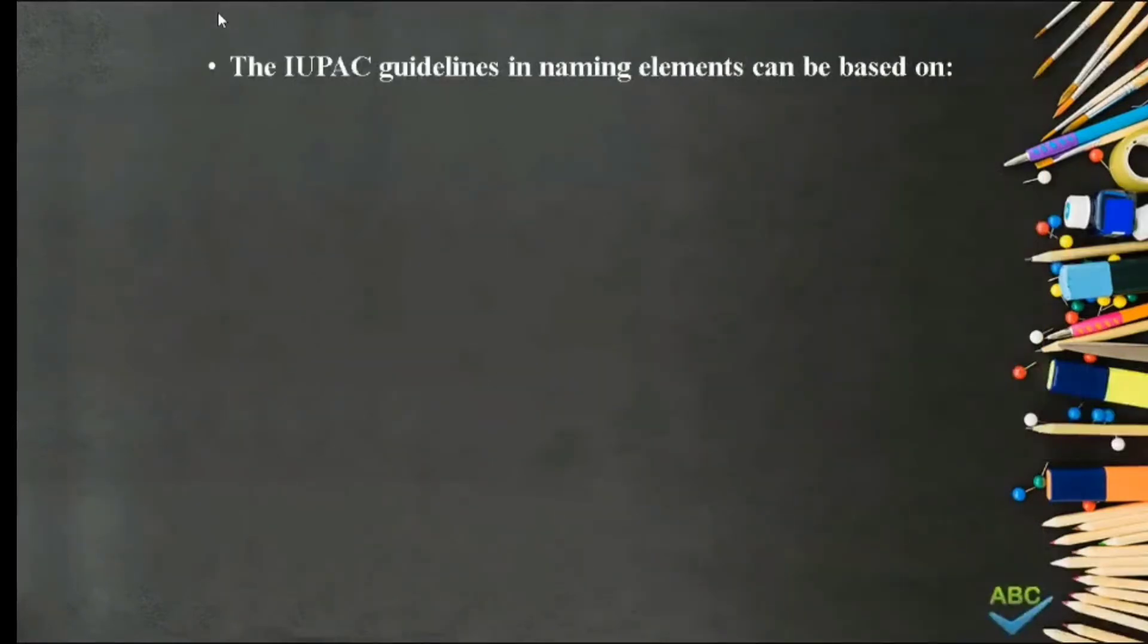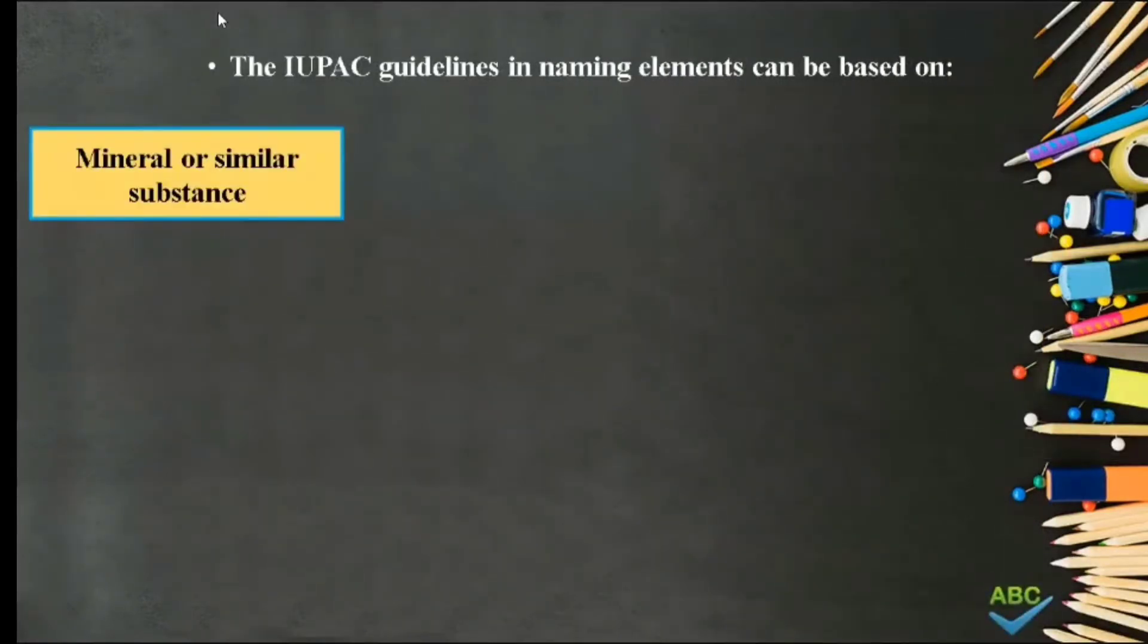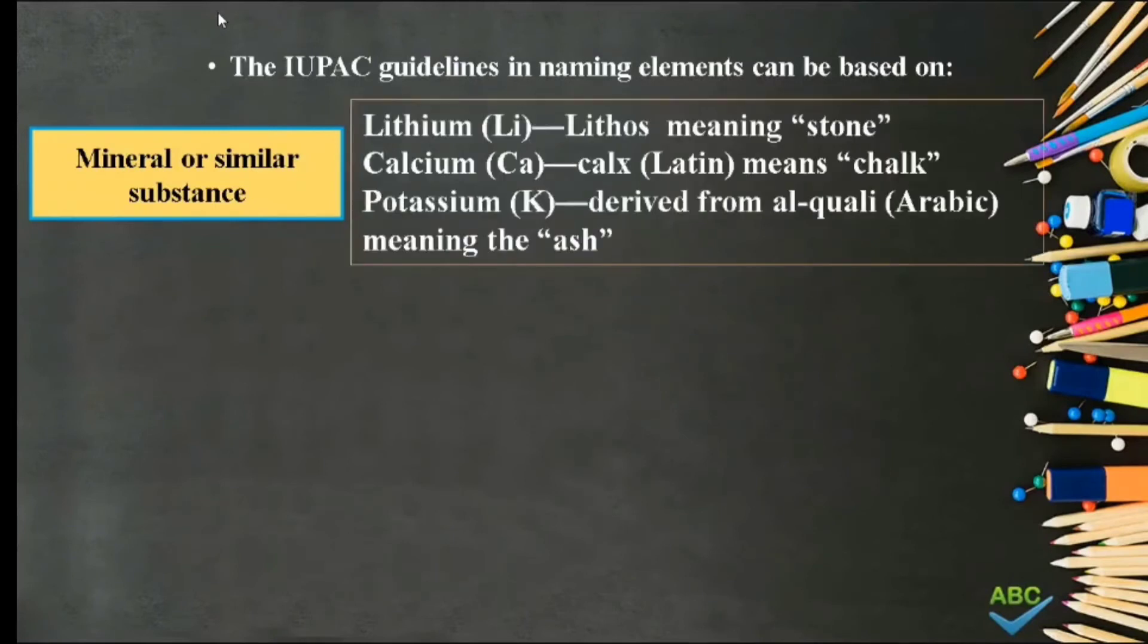Number 4. Mineral or similar substance. Examples of this are Lithium, from the Greek word lithos meaning stone. Calcium, from the Latin word calx means chalk. And potassium, derived from Arabic word al-qali, meaning the ash.